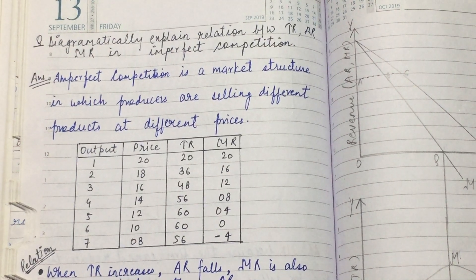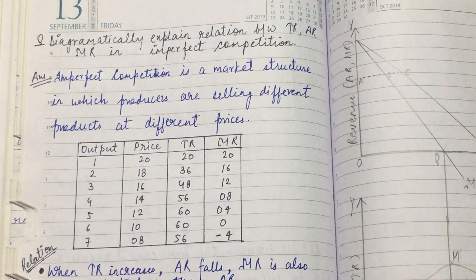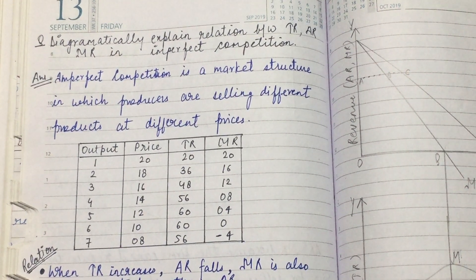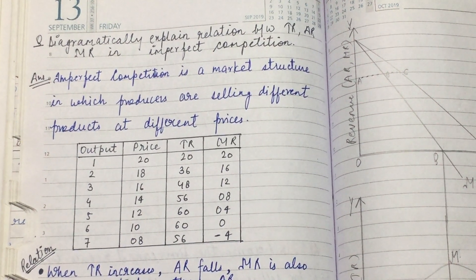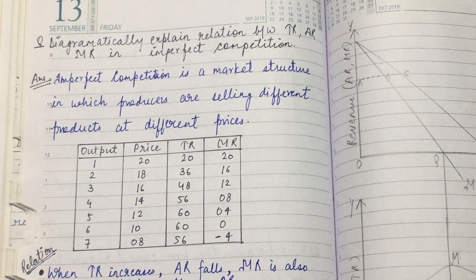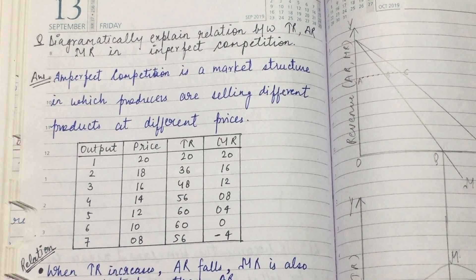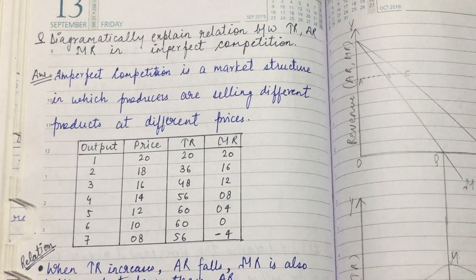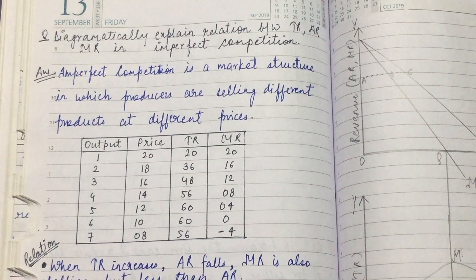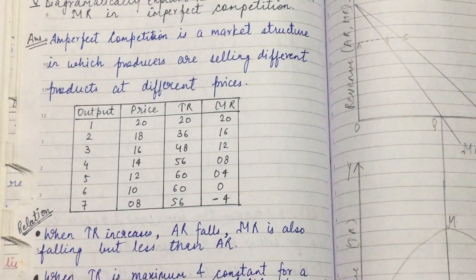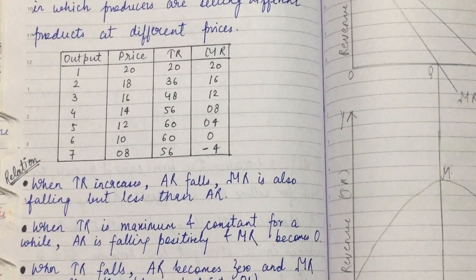When you have this question, first of all you have to give a meaning. What is imperfect competition? You will write here that imperfect competition is a market structure where producers are selling different products at different prices.